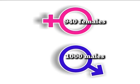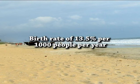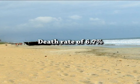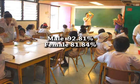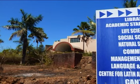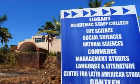The sex ratio of Goa is 968 females to 1000 males, which is higher than the national average of 940 females to 1000 males. The state has a birth rate of 13.5 per 1000 people per year and a death rate of 6.7 per 1000. The state's literacy rate has shown a gradual increase from 82.01% in 2001 to 87.40% in 2011, with male literacy at 92.81% and female literacy at 81.84%. Goa University is the premier center of higher studies in the state and most of the colleges are affiliated to it. There are also many medical and engineering colleges in the state.